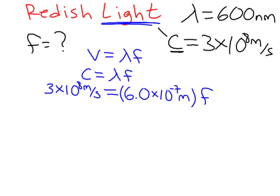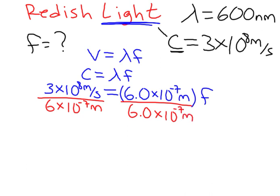Now, to solve for what we want, we just divide both sides by the wavelength, 6 times 10 to the minus seventh meters. And what you do to one side, you always have to do to the other side. Cancel, cancel. And here, the meters cancels with the meters there.